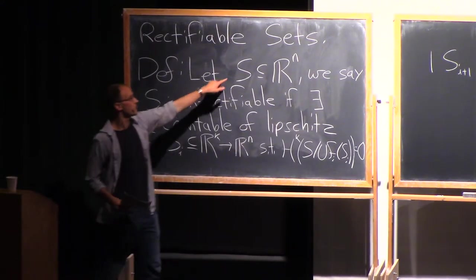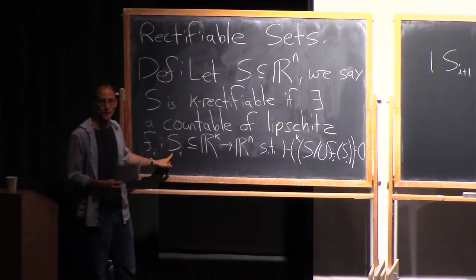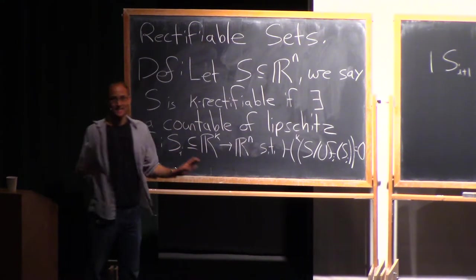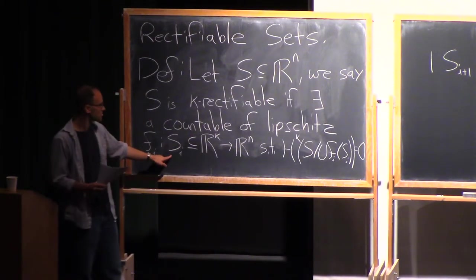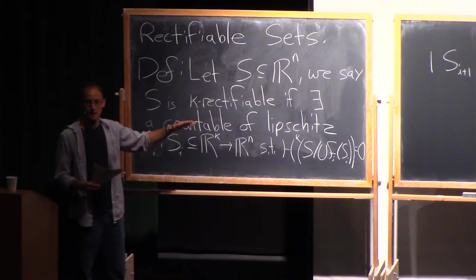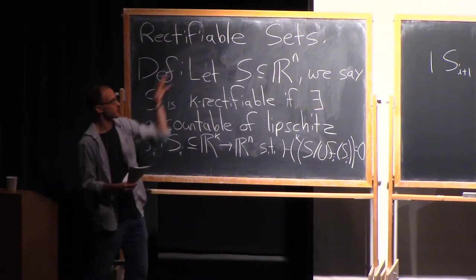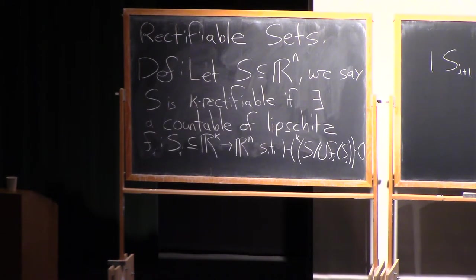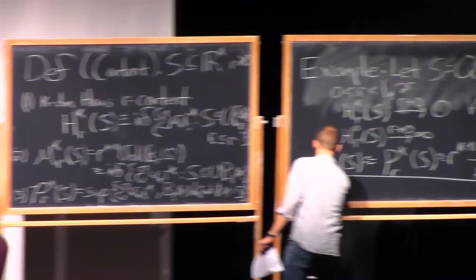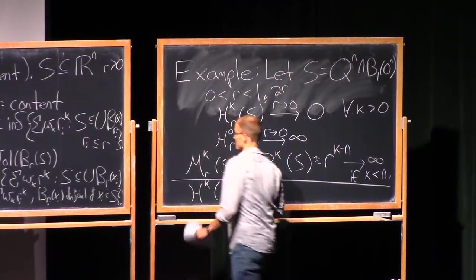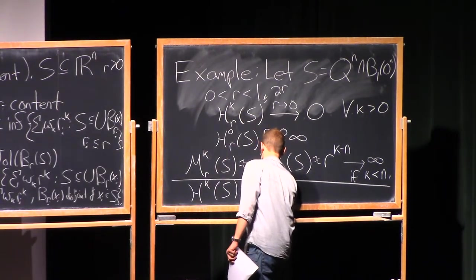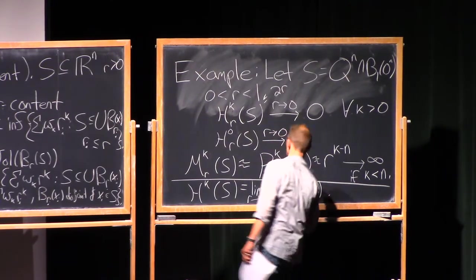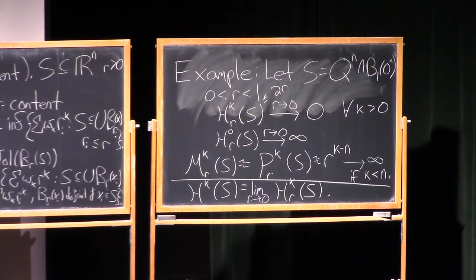So, almost every point of S is in the image of a Lipschitz map coming from RK. That doesn't sound like a lot if this is the first time you've seen this structure. That sounds pretty bad. However, you can essentially restrict yourself and assume that these Lipschitz maps are actually bi-Lipschitz maps. Bi-Lipschitz embeddings. There's no harm in that. So, view these things as actually being images that are fairly nice. They're spanning a submanifold that's bi-Lipschitz. And the k-dimensional Hausdorff measure on the set S is literally just the limit of that as R goes to zero.